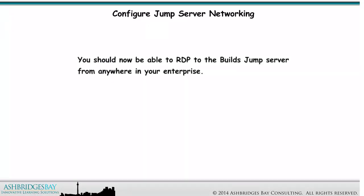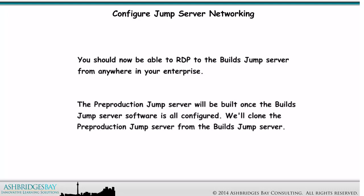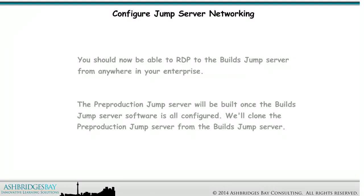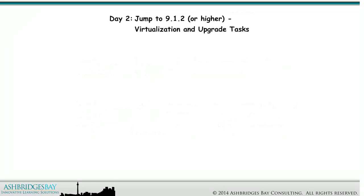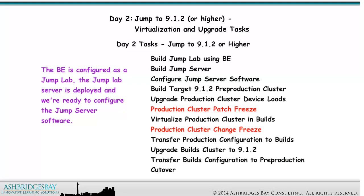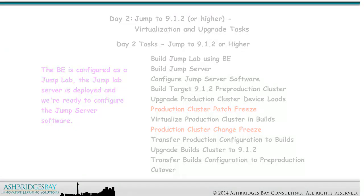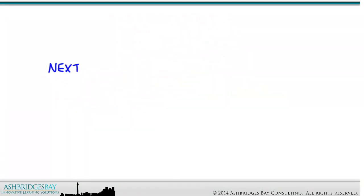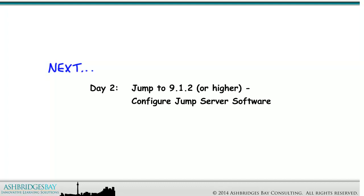You should now be able to RDP to the Builds Jump Server from anywhere in your enterprise. The Pre-Production Jump Server will be built once the Builds Jump Server software is all configured — we'll clone the Pre-Production Jump Server from the Builds Jump Server. The BE is configured as a Jump Lab. The Jump Lab server is deployed and we're ready to configure the Jump Server software. Coming up next: Day 2, Jump to 9.1.2 or Higher, Configure Jump Server Software.